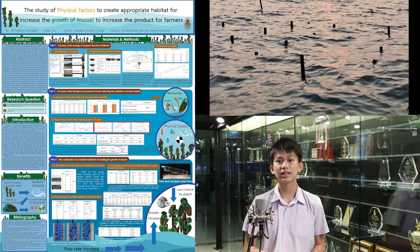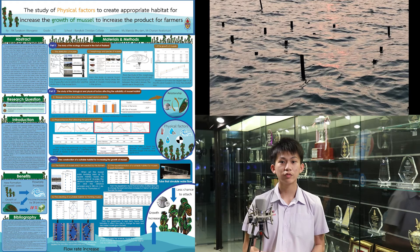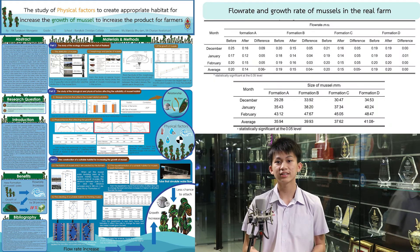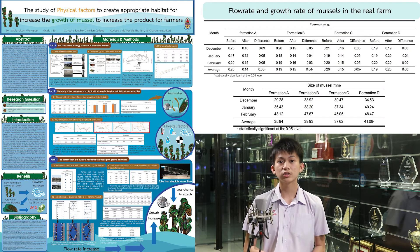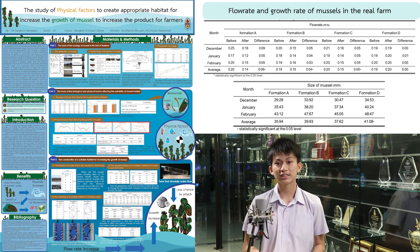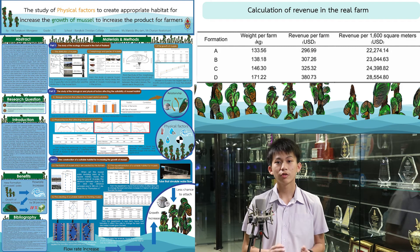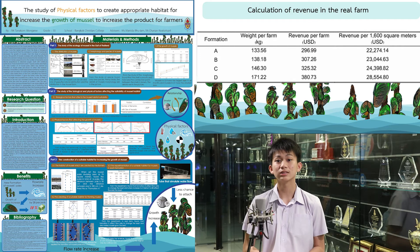After testing in the laboratory, I tested these four formations in a real farm to measure their chlorophyll levels and the growth of mussels. I found that Formation D still has the least effect on chlorophyll and the growth of mussels in Formation D is the best. From the revenue calculation, Formation D can increase revenue by up to $6,280 compared to the conventional way.